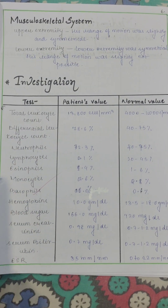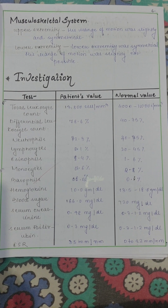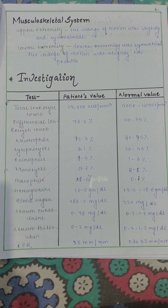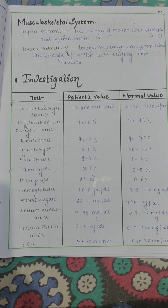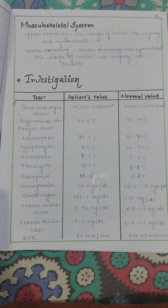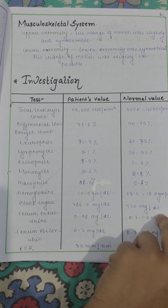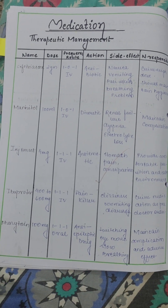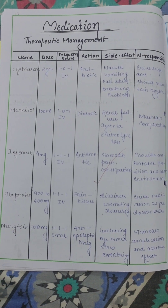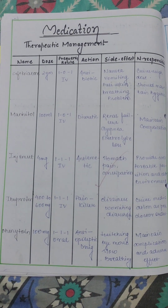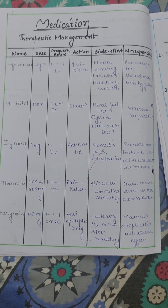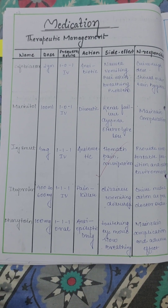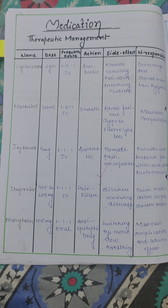Then do the musculoskeletal system investigations — write what laboratory investigations have been done and what the findings are. You have to write the normal values also. For medications the doctor has prescribed, write all the details: doses, frequency, route, action, side effects, and nursing responsibilities.